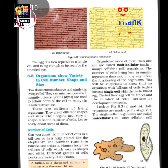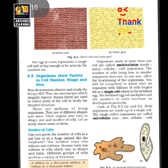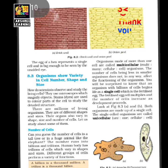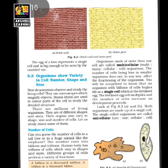Two pictures are shown: the first is of an amoeba and the second is of a paramecium. Both are single-celled organisms and are called unicellular. They are microscopic because they are not visible to the naked eye and can only be seen under a microscope. The amoeba has no fixed shape, while the paramecium looks like the shape of a slipper. This shows that unicellular organisms can have different shapes.